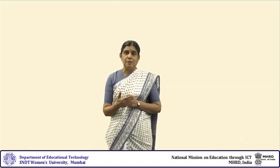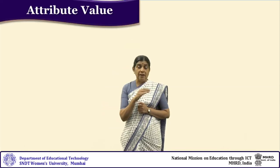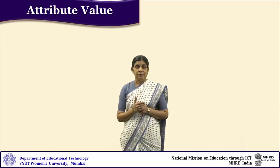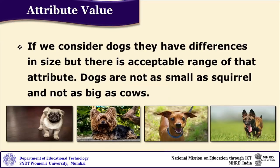Besides attributes, there is attribute value — the acceptable range of a particular attribute. For example, consider dogs: they have differences in size. A Pomeranian may be very small, an Alsatian may be big, but there is an acceptable range to that attribute. Dogs are not as small as a squirrel and not as big as a cow. So there is an acceptable range — all dogs may not have the same size and shape, but there is an acceptable range. That acceptable range is called attribute value.